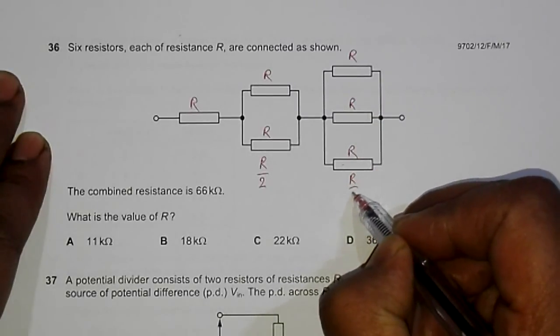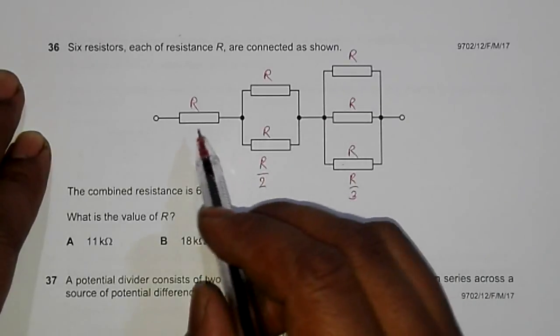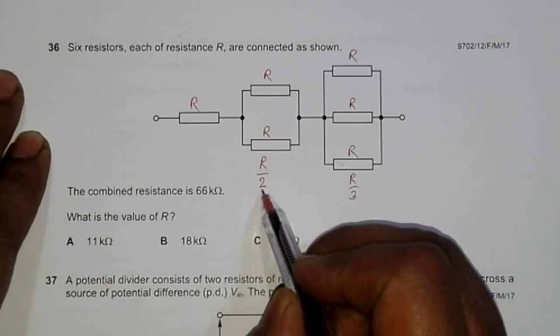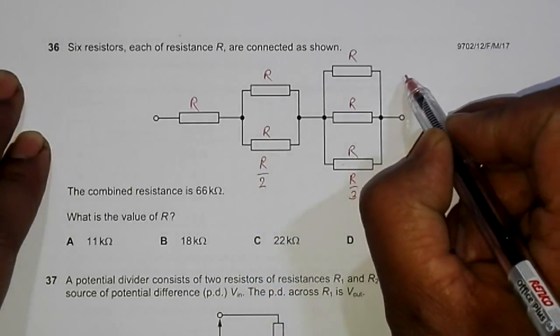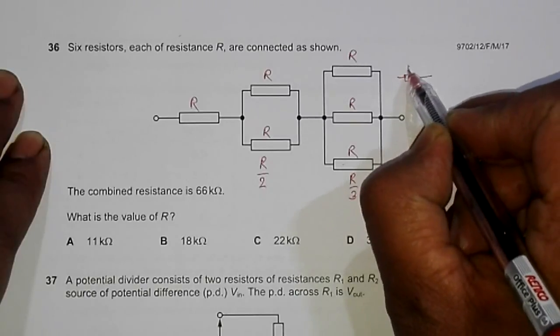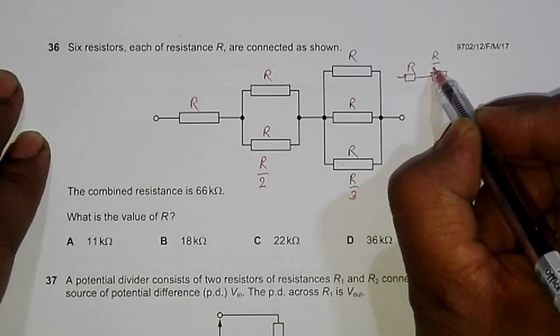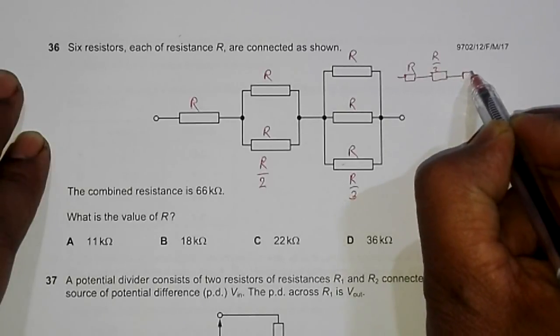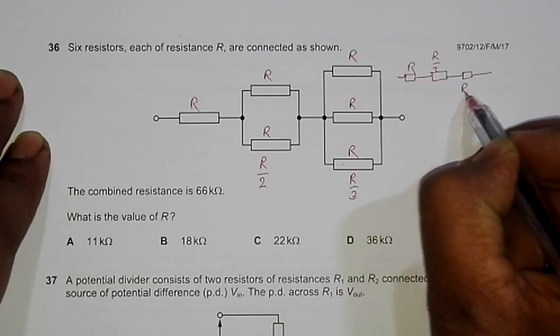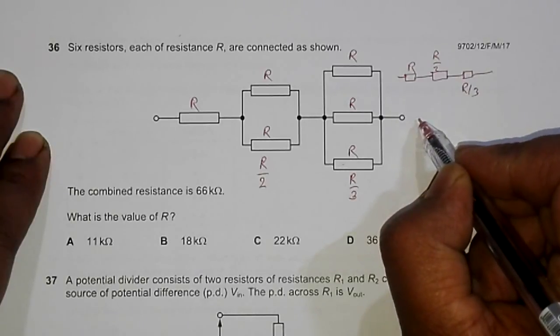Now the circuit will be somewhat like this: we have R, R/2, and R/3 in series. If I redraw the diagram, it will be this is R, this one will be R/2, and this one will be R/3.